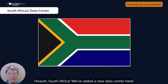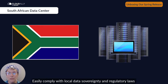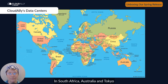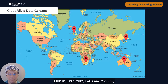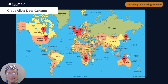How about South Africa? We've added a new data center there. Easily comply with local data sovereignty and regulatory laws with nine data centers worldwide — in South Africa, Australia, Tokyo, Dublin, Frankfurt, Paris, the UK, Canada, and the US.